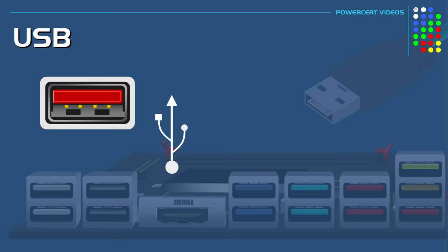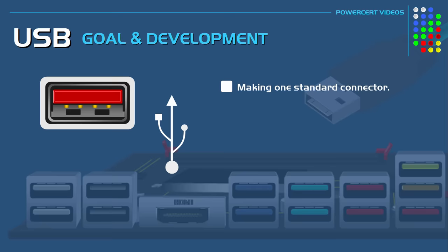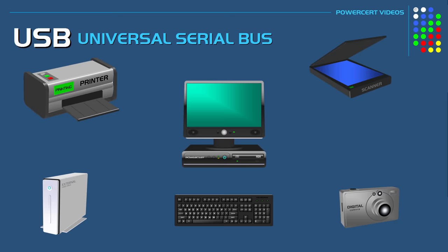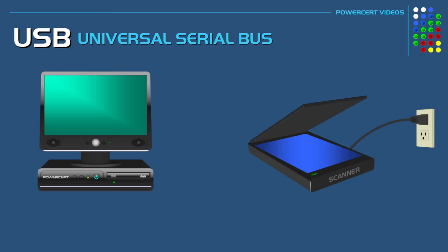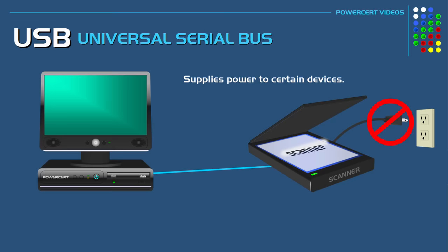The goal of the development of the USB was to make connecting devices to a computer much easier. This is done by first making one standard connector, therefore eliminating all the other different kinds of connectors; second, by making connected devices easier to configure; and third, to provide fast transfer rates. The USB port is also hot swappable, so devices can be connected or disconnected without turning off the computer or the device. The USB also self-configures itself, which eliminates the need for any extensive configuration. In addition, certain smaller devices can be powered by the USB port without the need for additional power cables.